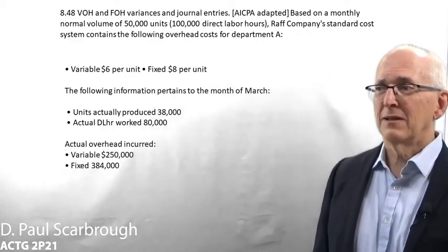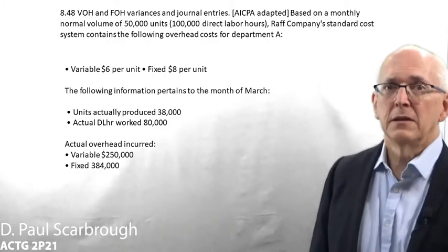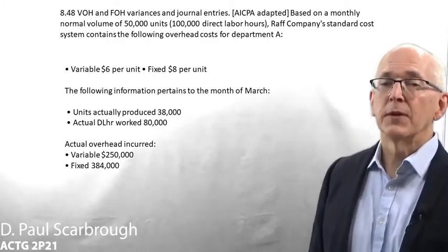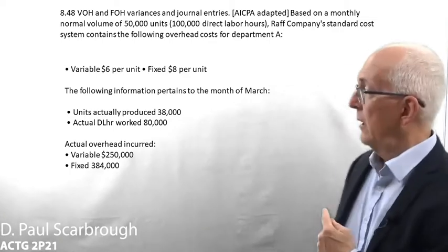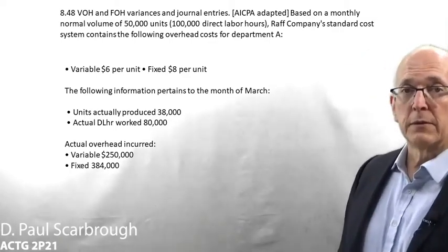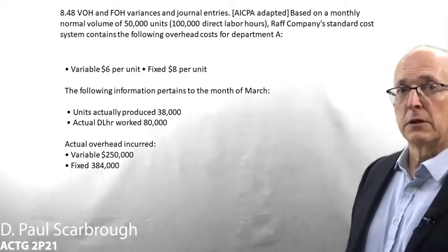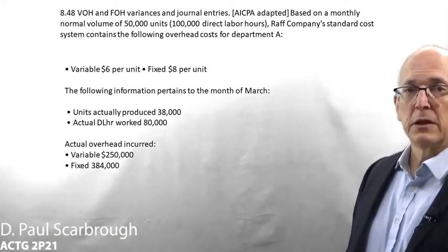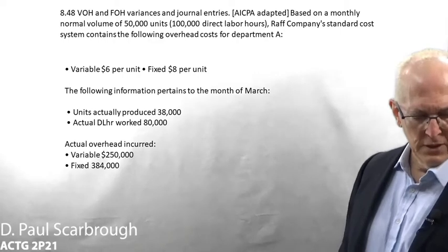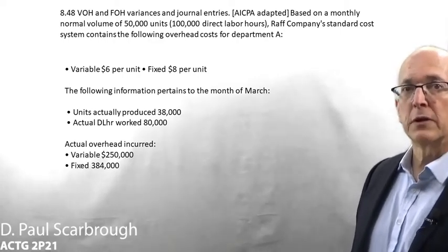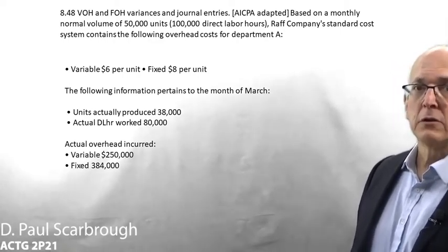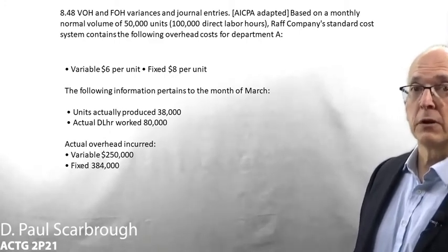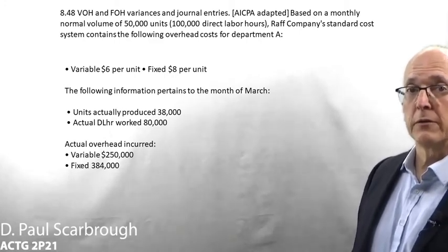They are giving you some other derived information, and what you have to do is know the standard cost card well enough that you can actually back-compute a few numbers. This is quite a bit trickier than the last problem. When I say tricky, obviously the numbers are easy — it is knowing how to use the numbers that are there that is quite a bit trickier. If you don't have the paper copy of the book, press pause and jot this down before we continue. You need to have this in front of you and refer back and forth to it while you are following along.